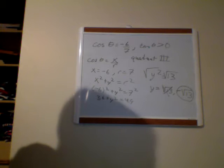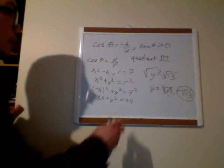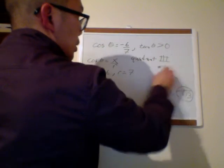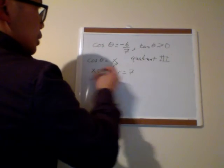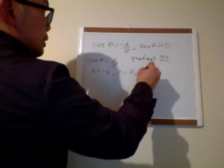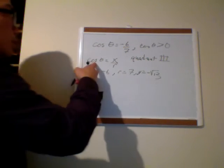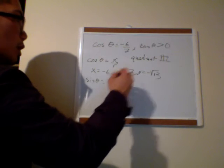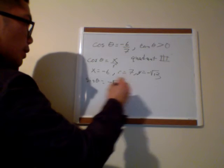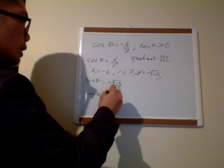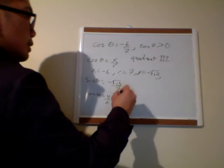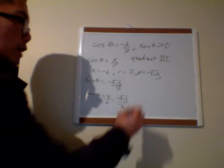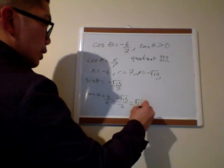So now let me find all the other trig functions knowing that x is negative 6, r is 7, and y is negative root 13. My sine is y over r, so it's negative root 13 over 7. My tangent is y over x, so that's negative root 13 over negative 6 — negative over negative makes it positive, so root 13 over 6.